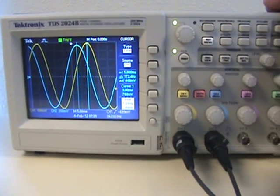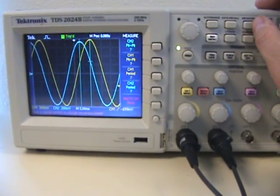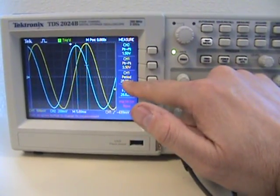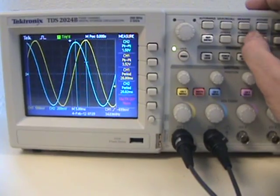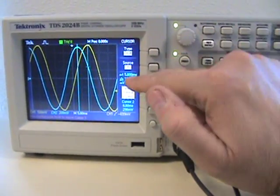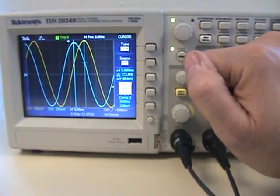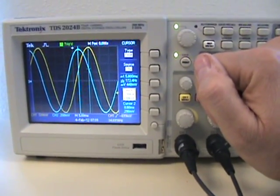If we go back to measure, we have 28.8 and then our cursors. So it's basically 5.8 over 28.8 and then times 360 degrees to get our phase shift in degrees.